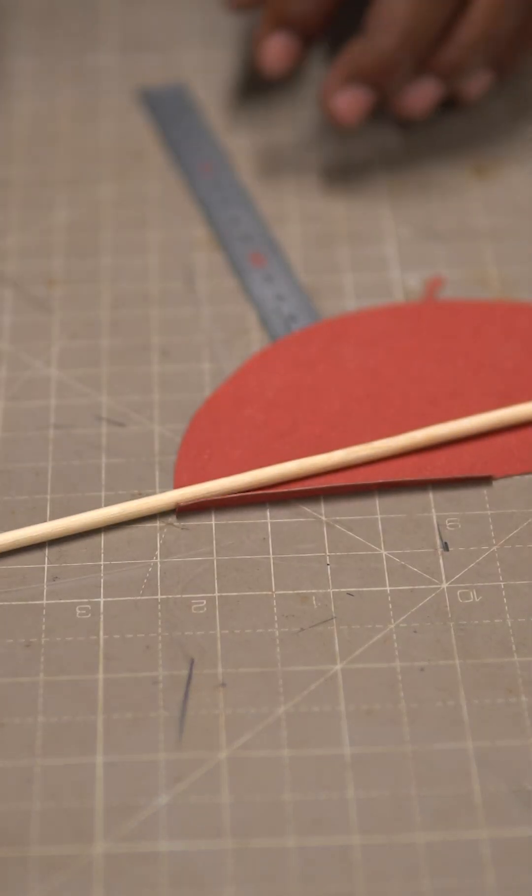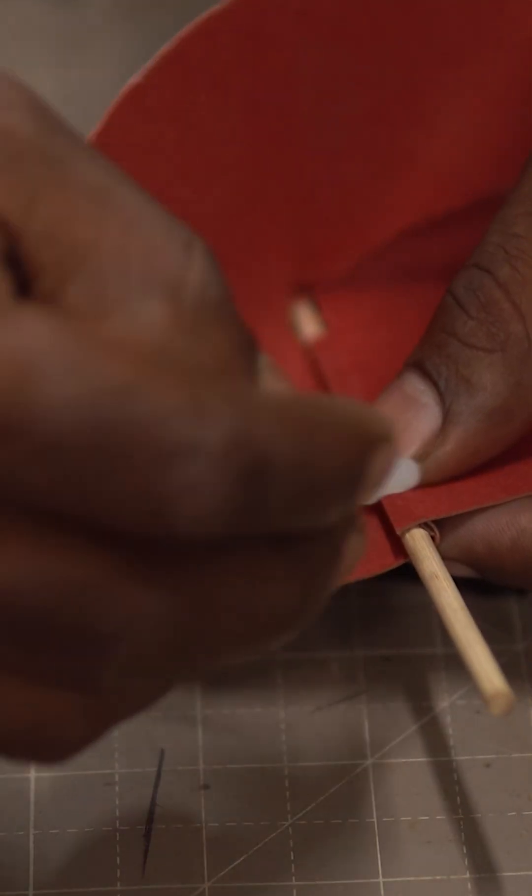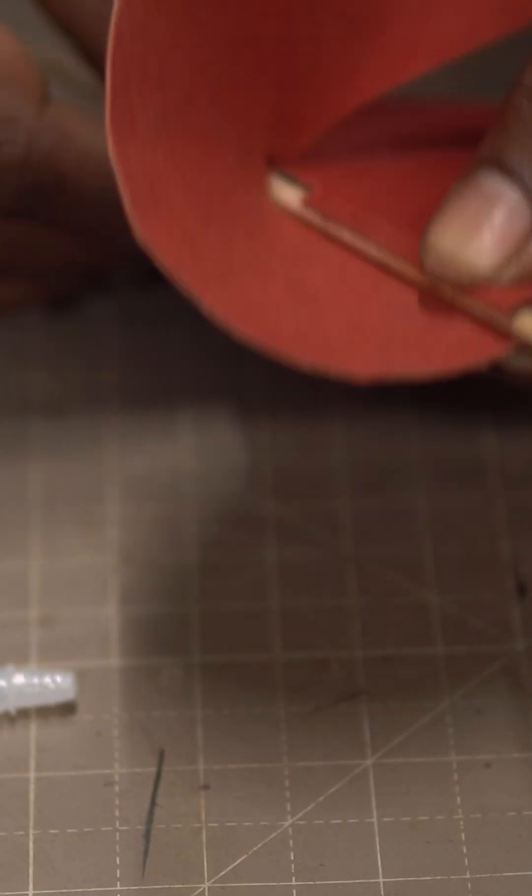Bend this flap and apply glue and stick it to the center of the skewer. Do this two more times by placing the semicircles by offsetting 120 degrees. Basically, we are dividing 360 degrees by 3.